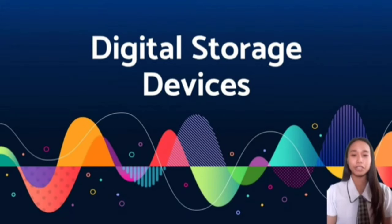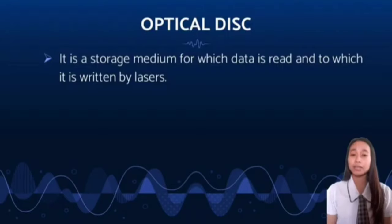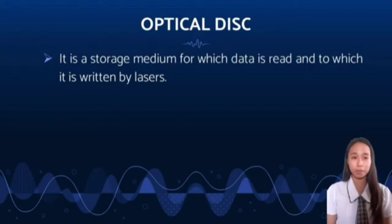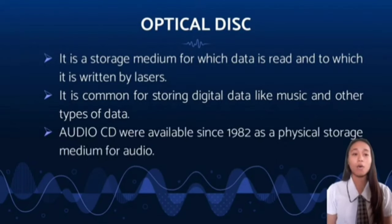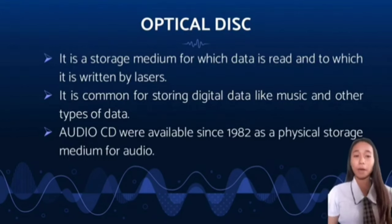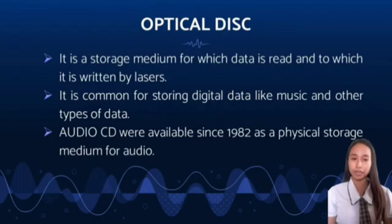Under the digital storage devices is the optical disk. Optical disk is a storage medium for which data is read and to which it is written by lasers. It is common for storing digital data like music and other types of data. Audio CDs were available since 1982 as a physical storage medium for audio. Optical disks are used as a portable and secondary storage device. Optical disk can store more data than the previous generation of magnetic storage media and has a relatively longer lifespan. CDs or compact disk, DVD, digital versatile or video disk, and Blu-ray disk are the most common optical disks that are used.